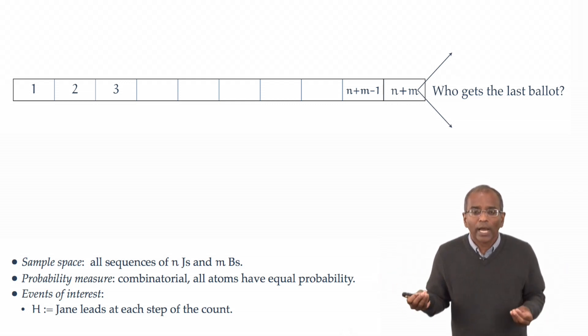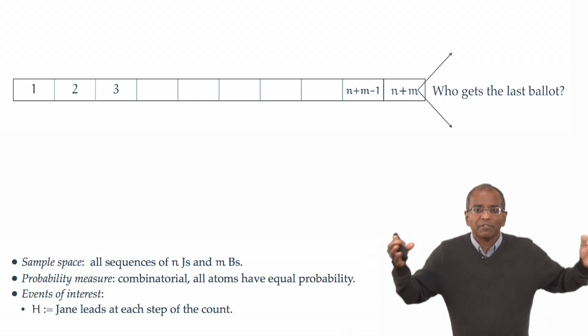And there's no possibility otherwise, Bob will take an early lead. That doesn't seem very informative. There's no variability possible at all for the first step, for the first ballot, if Jane is to lead at every step.